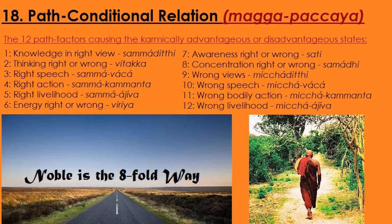The 18th is the path conditional relation — Magga Pachaya. These twelve factors cause karmically advantageous or disadvantageous states. They are: right view (Sammaditthi), right or wrong thinking, right speech, right action, right livelihood, right energy or effort (or wrong effort), awareness right or wrong, concentration right or wrong, wrong views (Micchaditthi), wrong speech, wrong bodily action, and wrong livelihood. These are the 12 path factors — conditional relations that cause future advantageous or disadvantageous physical and mental states to arise.